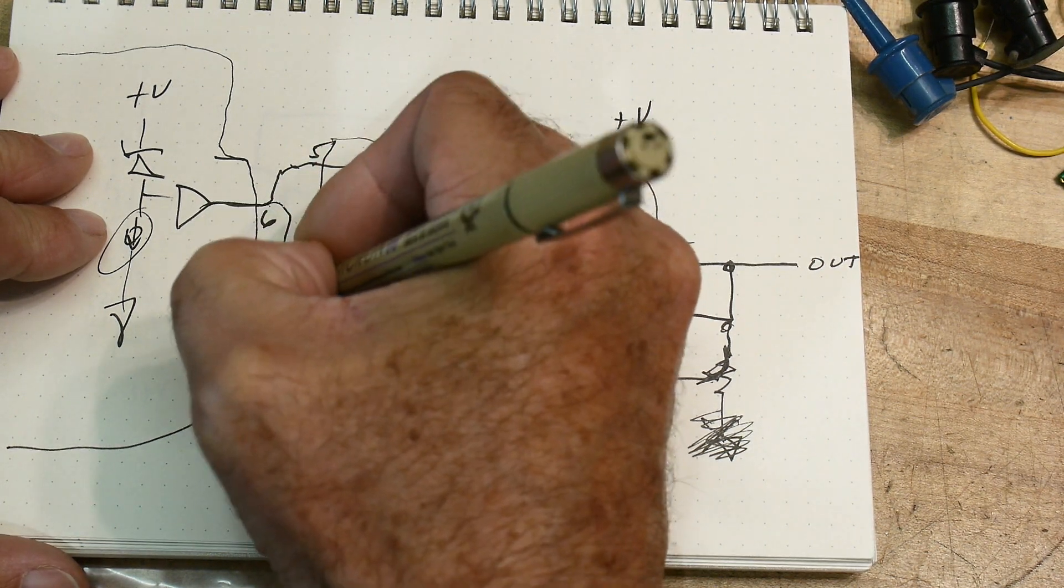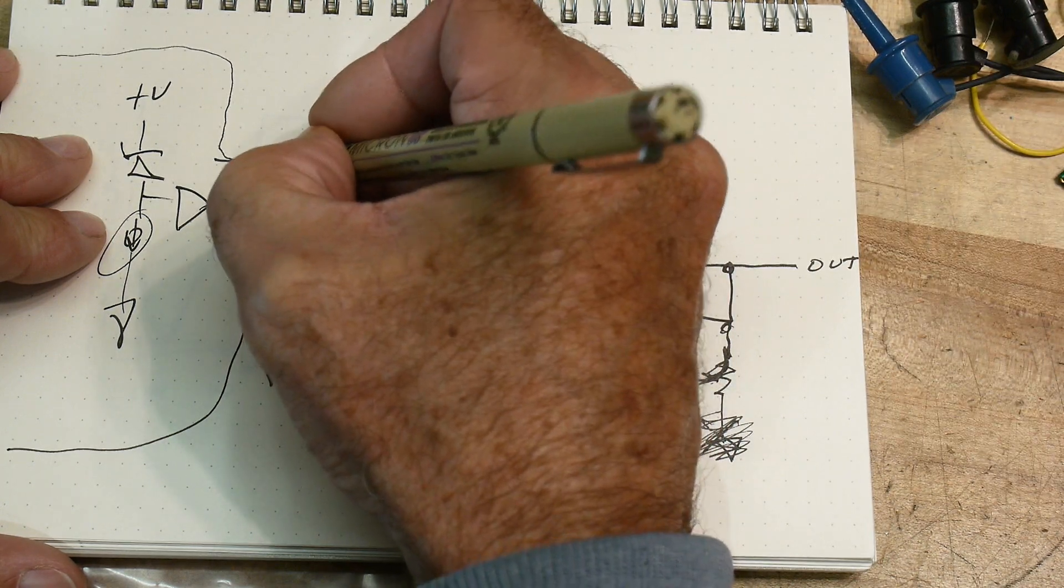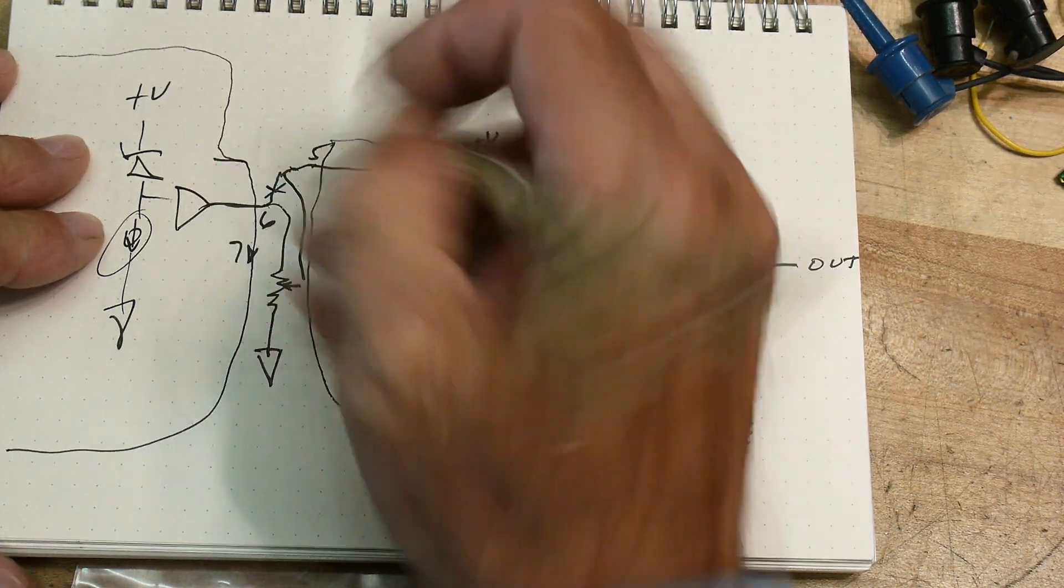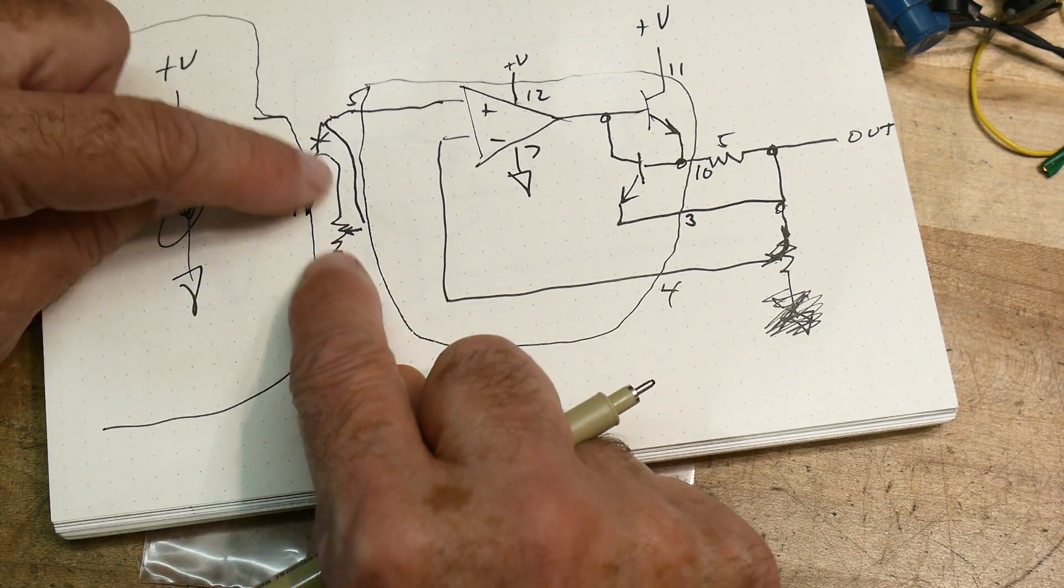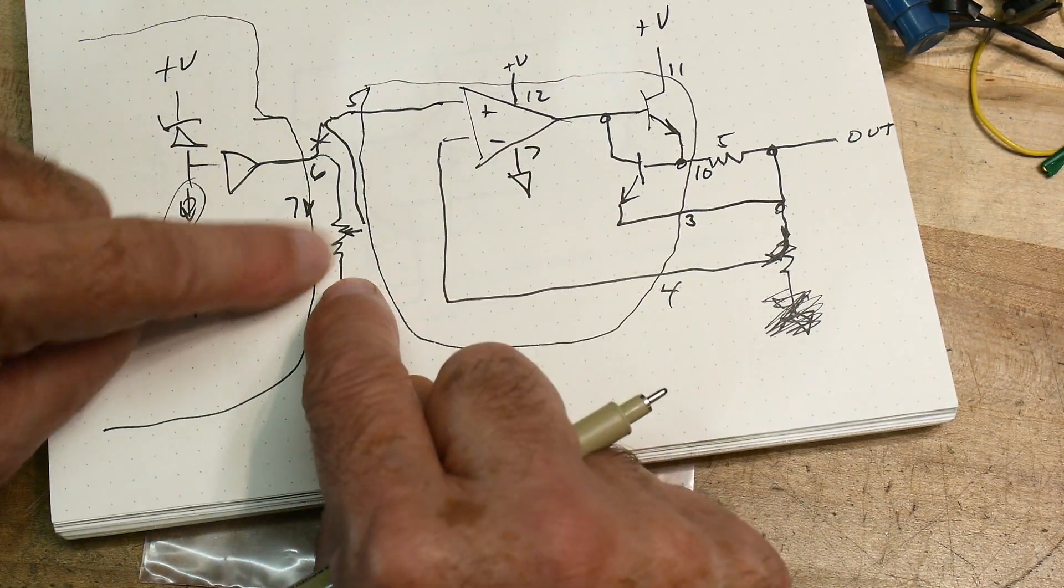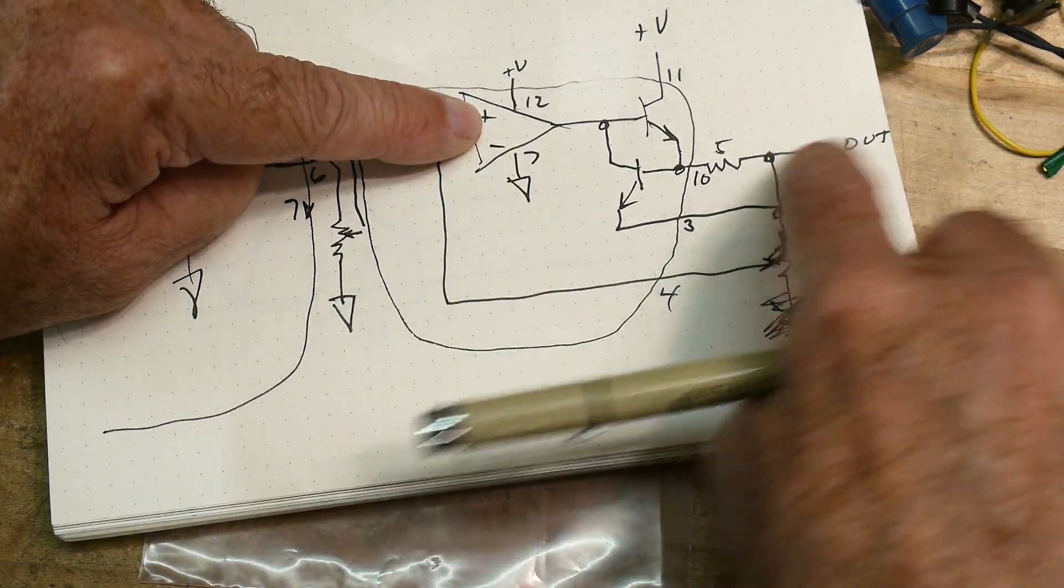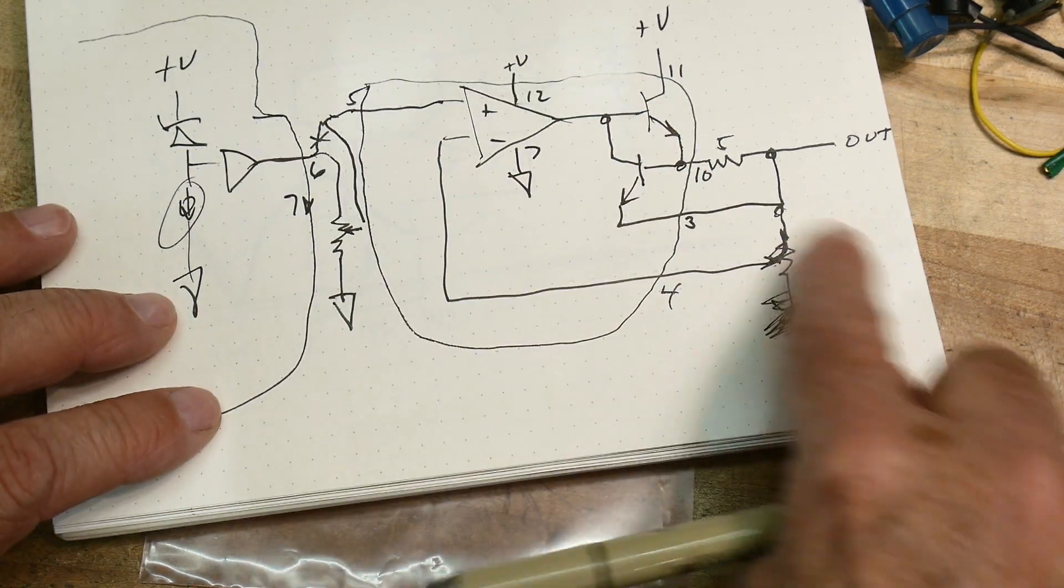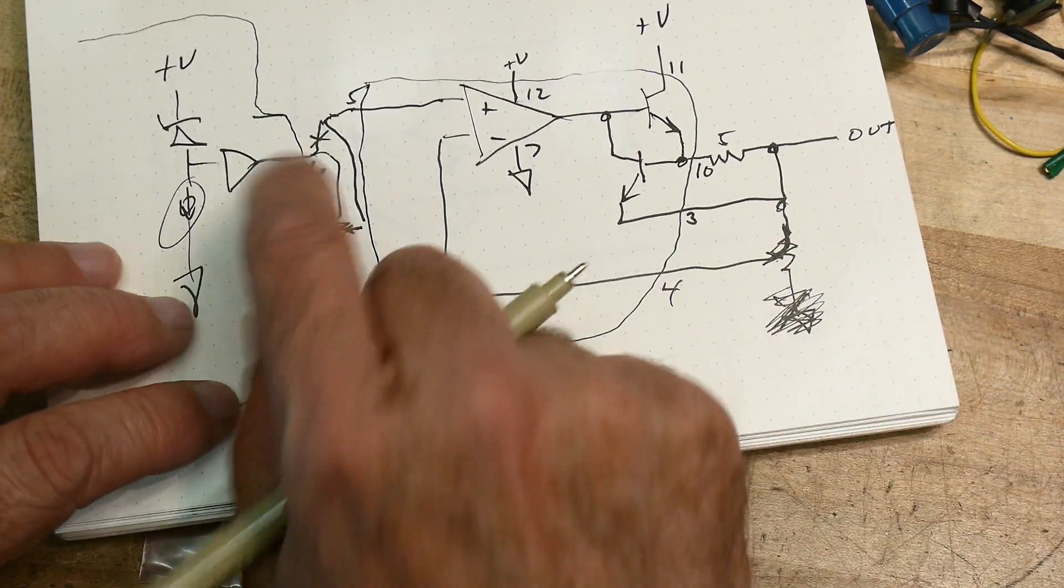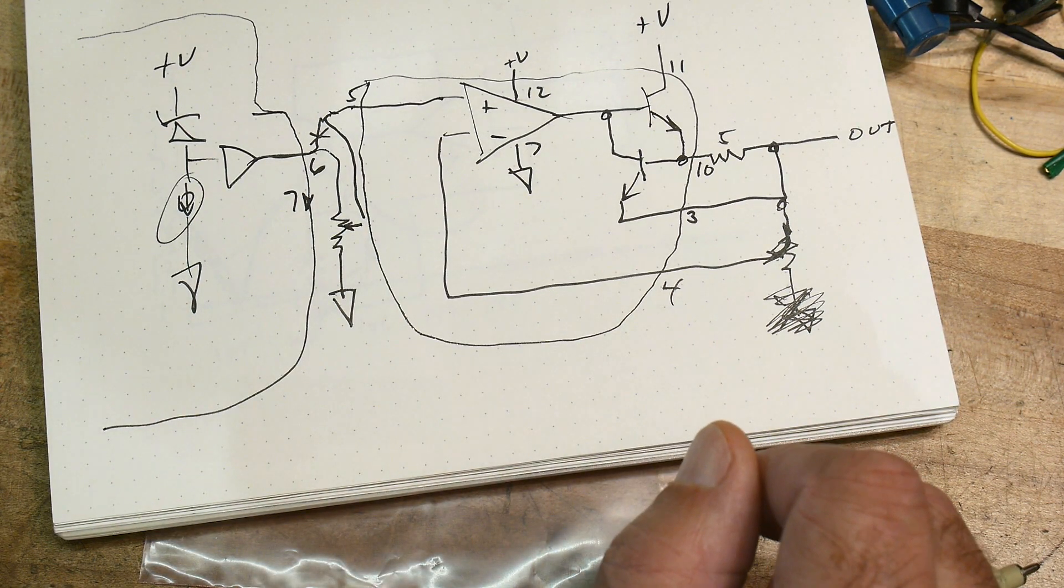What I can do though, because these are separate, this is outside the package, I can take my 7 volts and I can divide it down with a potentiometer, and then I can feed that back around in. So if I set this to 3 volts, then I'll have 3 volts here and this will be 3 volts and the output will be 3 volts.